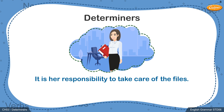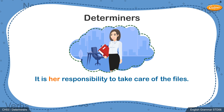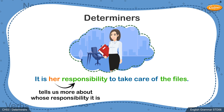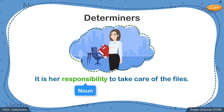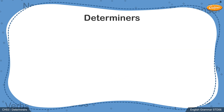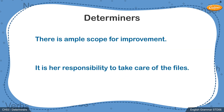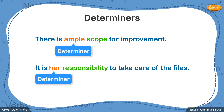In this sentence: it is her responsibility to take care of the files. Students, you will notice that the word 'her', which is a pronoun, adds to the meaning of the sentence. It tells us that it is the lady's responsibility to take care of the files. It also precedes the noun 'responsibility', adding more meaning to the noun and the sentence as a whole. Hence, words like 'ample' and 'her', which appear before nouns like 'scope' or 'responsibility', are called determiners.